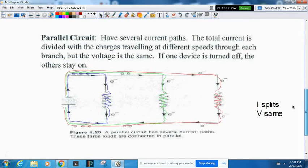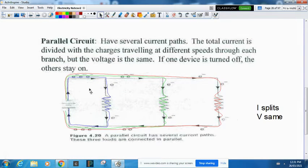In a parallel circuit, they have several pathways. The total current splits, but the voltage is the same. If you add more light bulbs, they're all going to stay bright as long as there's enough energy from the power source.